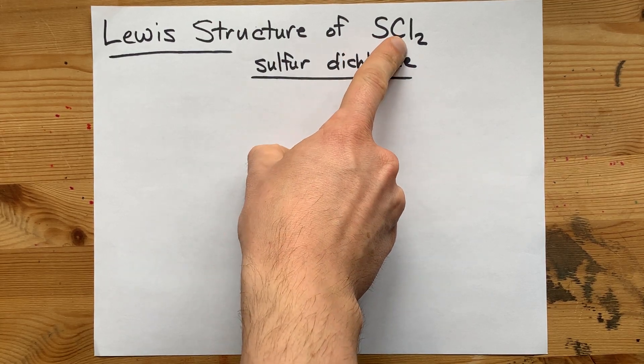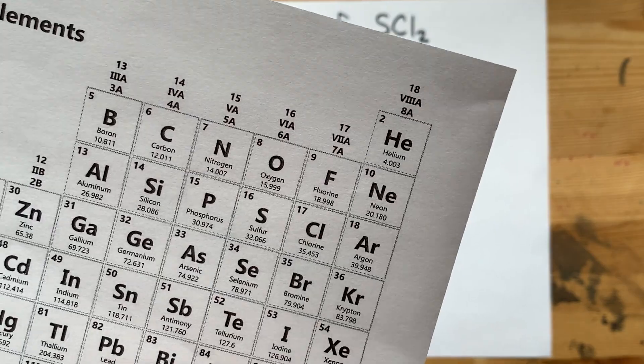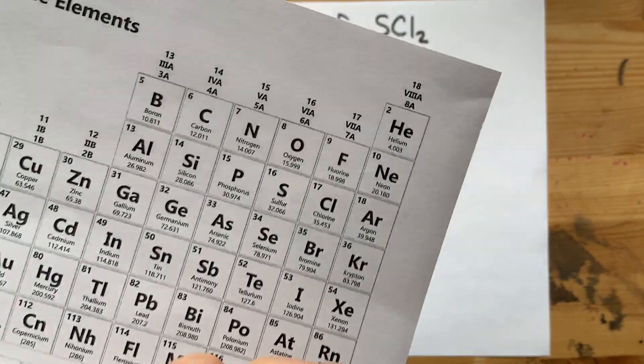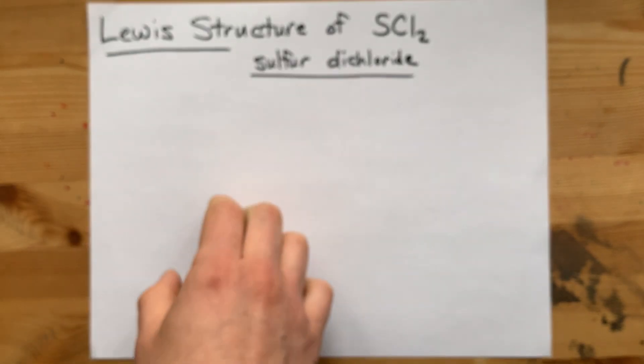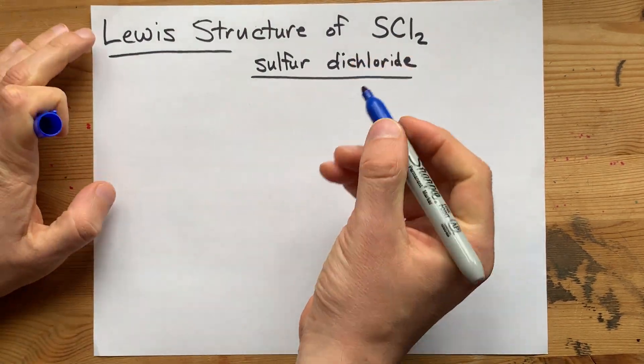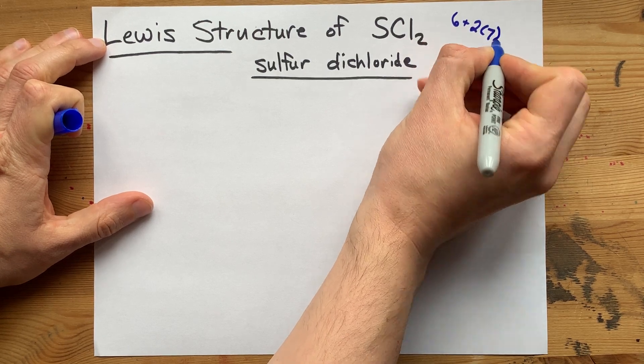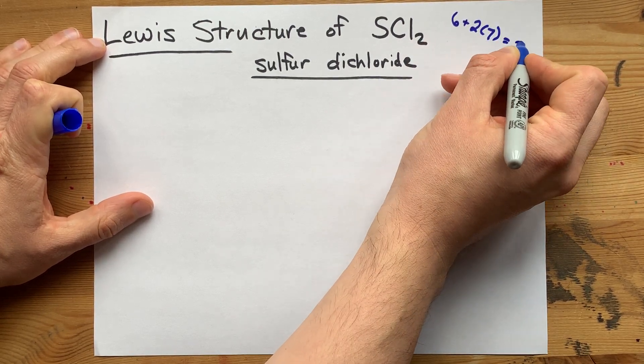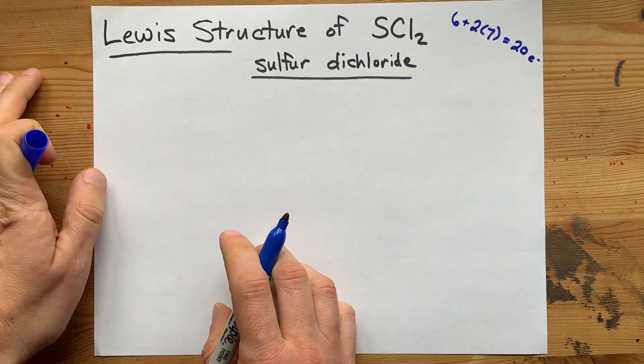We got one sulfur bonded to two chlorines. Sulfur is in group 16, so it brings six valence electrons. Chlorine is in group 17, so it brings seven valence electrons each. That is six and two sevens, since we have two chlorines. That makes for 20 electrons total in this structure.